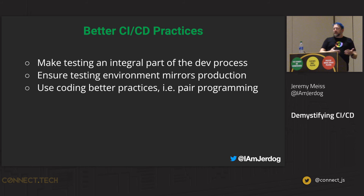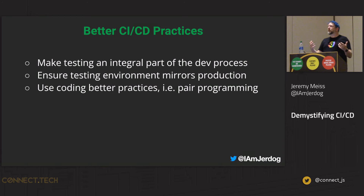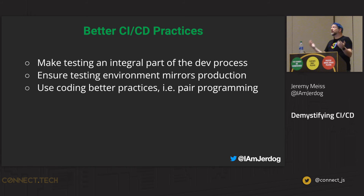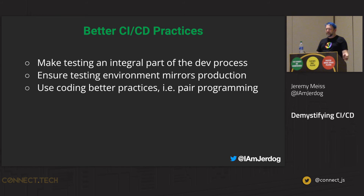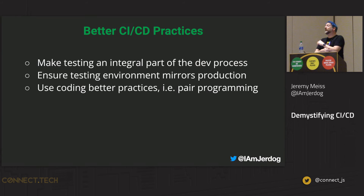Another better practice is pairing during coding — pair programming was talked about as something introduced with Extreme Programming. For more complex pieces of functionality, pairs can discuss the architecture approach before a single line of code is even written. And before any code is merged to production, another developer is reviewing that code. This helps ensure that coding best practices are followed and that the code does not conflict with existing code — it all comes back to the importance of pushing quality code.